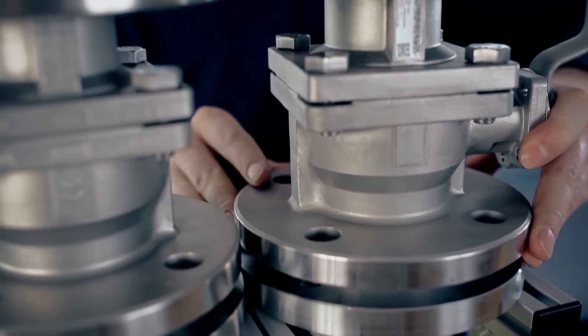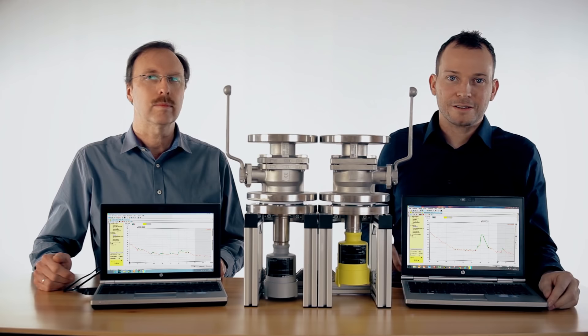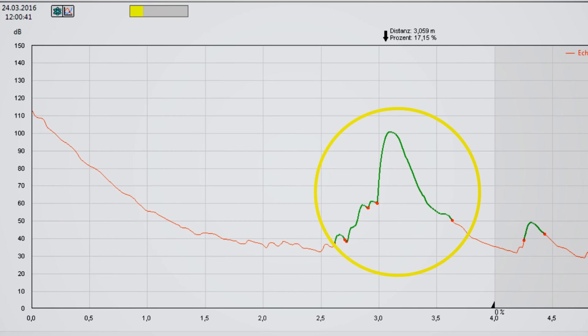On this side we also put a ball valve on the top of the Vega Pulse 64. We have a look on the echo curve. You see there is a slight change in the signal but there is not a big problem for the sensor. He gets not false reflection and he still has a very nice product echo to measure.